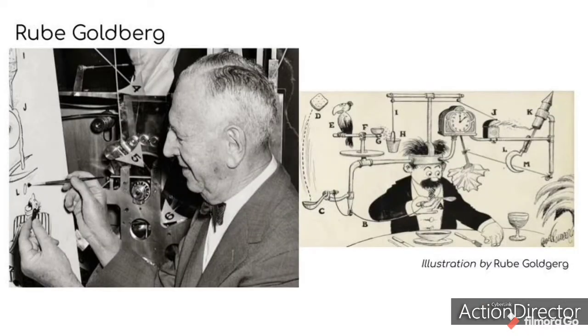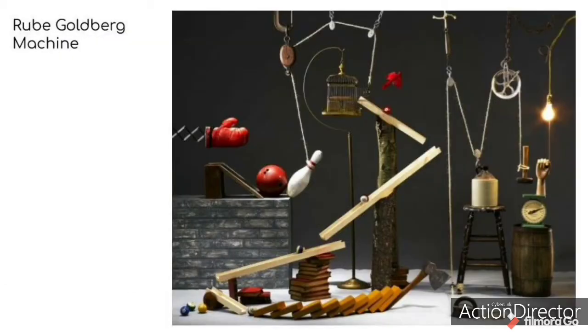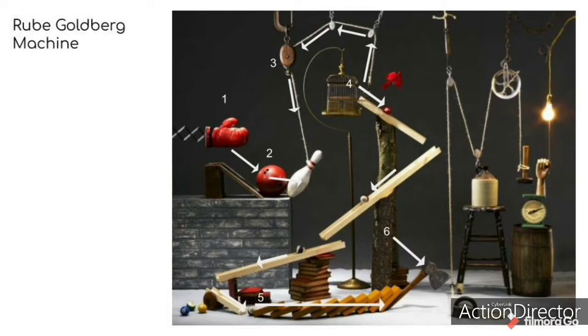Let's take a look at the Rube Goldberg machine. This machine was named after American cartoonist Rube Goldberg, and it's a machine intentionally designed to perform a simple task in an indirect and overly complicated way. Usually, these machines consist of a series of simple, unrelated devices. The action of each triggers the initiation of the next, eventually resulting in achieving a stated goal.